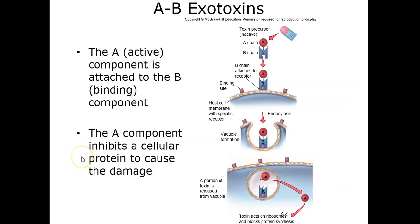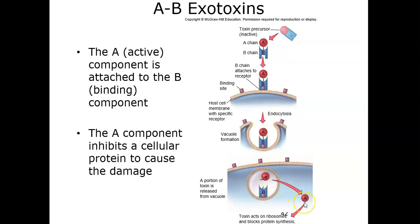Exotoxins are often called AB toxins. They are comprised of two components: the B component is the binding component that allows the toxin to adhere to the receptor on the host cell, and once it's accumulated in a vacuole by the host cell, the A portion — the active portion — is released and goes on to attack the cell.